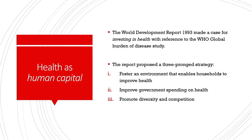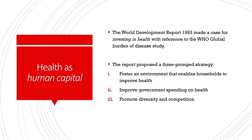There are three strategies proposed. One is fostering an environment that enables households to improve health — the idea that households often make decisions regarding the health of their family members, and at the macroeconomy level there are conditions that can enable better household-level decisions. The second was improving government spending on health, also couched in the framework of health as human capital. Finally, promoting diversity and competition and how that contributes to the human capital nature of health.